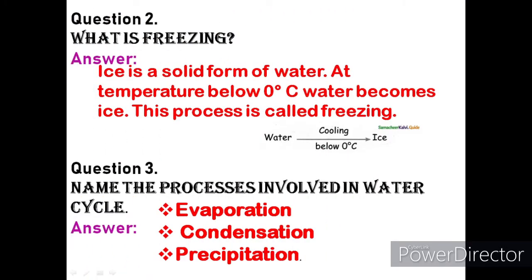Question 2: What is freezing? Answer: Ice is a solid form of water. At temperatures below 0 degrees Celsius, water becomes ice. This process is called freezing. Water gives ice in the cooling method below 0 degrees Celsius.